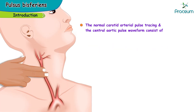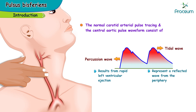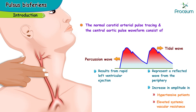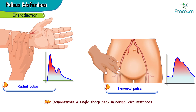The normal carotid arterial pulse tracing and the central aortic pulse waveform consists of an early component, the percussion wave, which results from rapid left ventricular ejection, and a second smaller peak, the tidal wave, presumed to represent a reflective wave from the periphery. The tidal wave may increase in amplitude in hypertensive patients or in those with elevated systemic vascular resistance. Radial and femoral pulse tracings demonstrate a single sharp peak in normal circumstances.